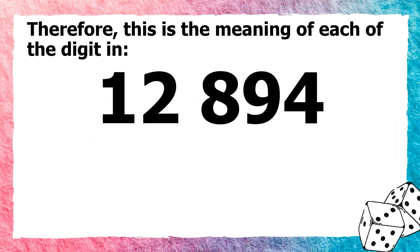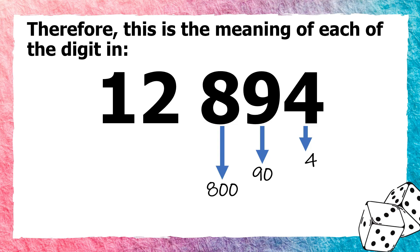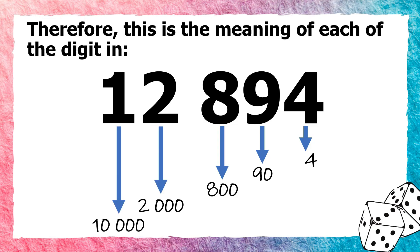Therefore, this is the meaning of each digit in 12,894: 4 means 4, 9 means 90, 8 means 800, 2 means 2,000, and 1 means 10,000.